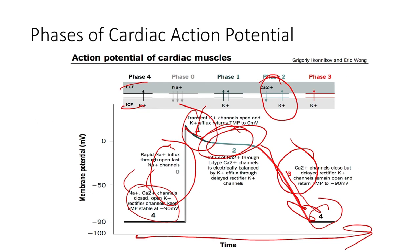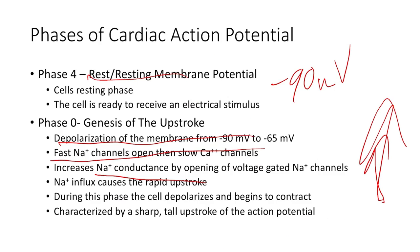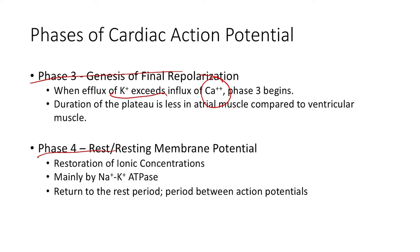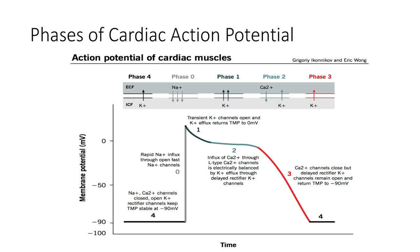Easy way to remember it: sodium enters in phase zero — that's the big event. In phase one, potassium is leaving. Phase two: calcium and potassium are balanced, so we have a plateau. Phase three: calcium channels begin to close; potassium channels are still open and we start moving back toward more negative resting potential. In phase four, we restore the ionic concentrations using the typical sodium-potassium pumps. The cells get back to that resting potential to receive another impulse, and we repeat this cycle over and over again to keep coordinated beating.